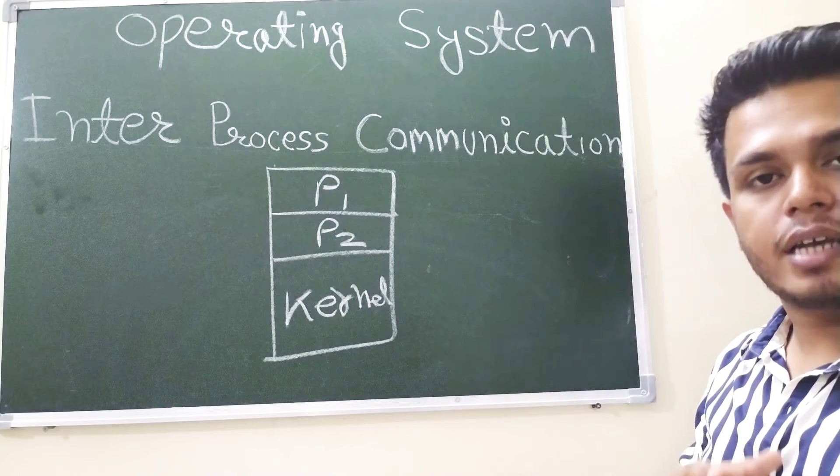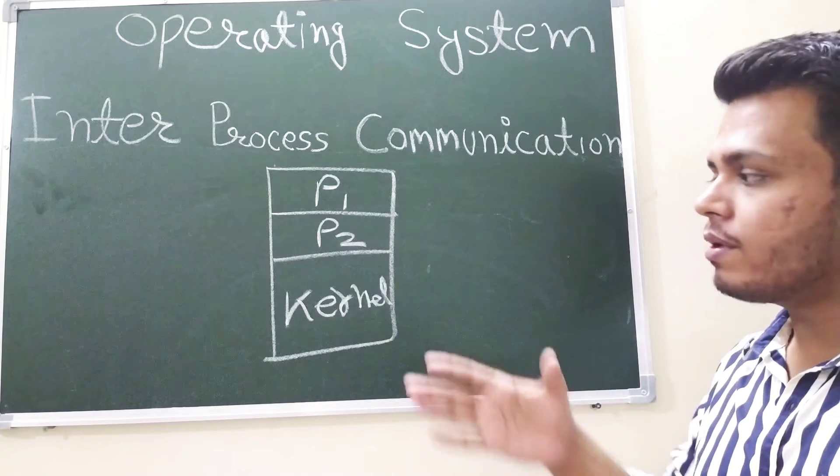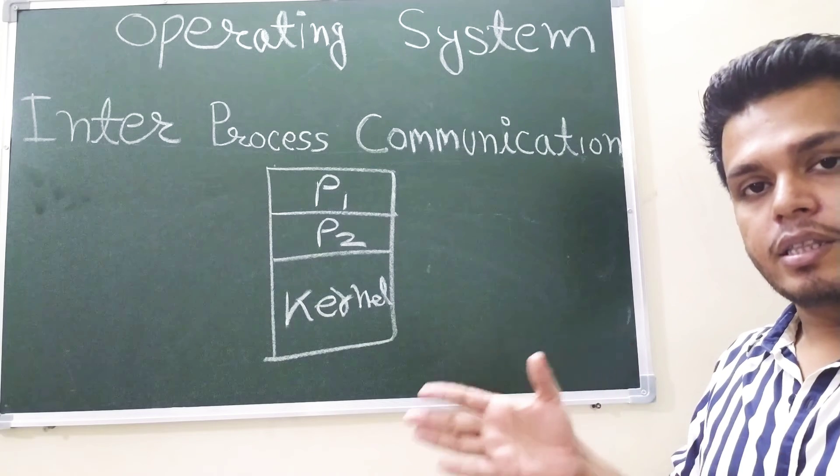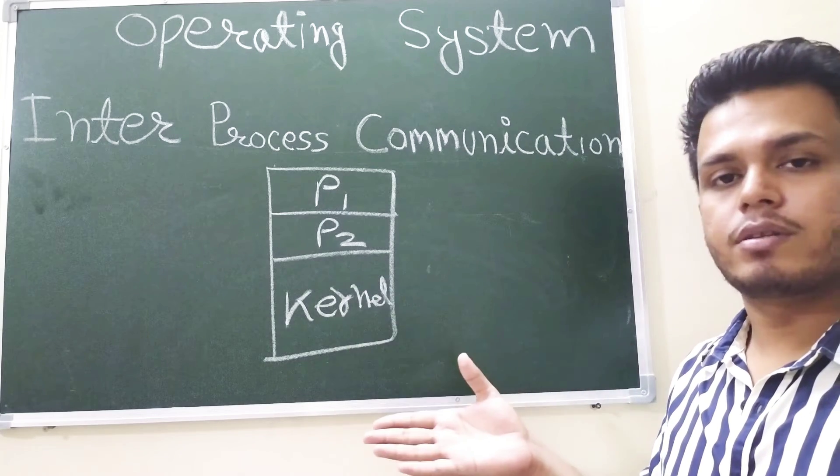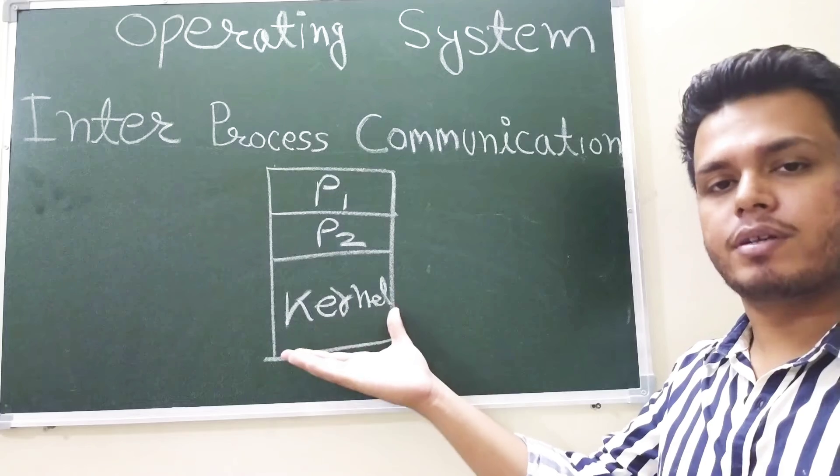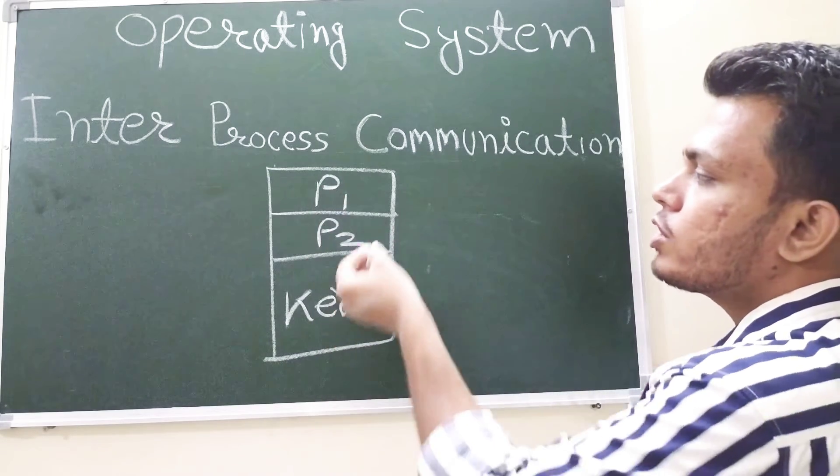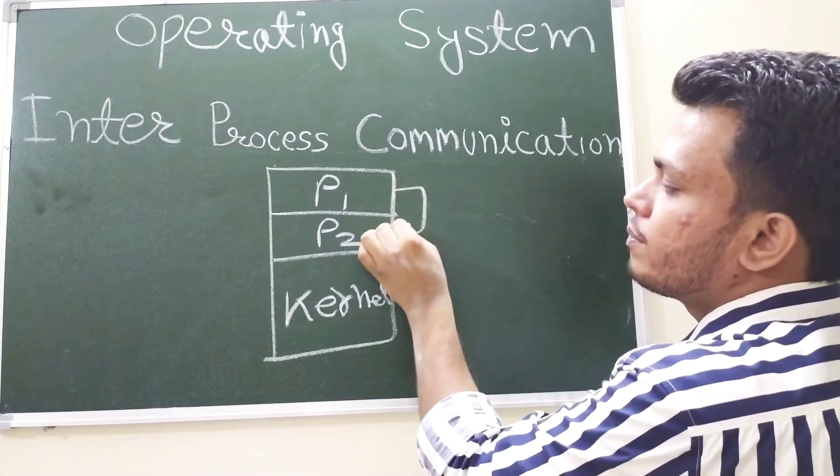Kernel is what? It is the heart of the operating system which takes all the responsibilities on behalf of the operating system. You can consider this part as the operating system. So this is P1 and P2.